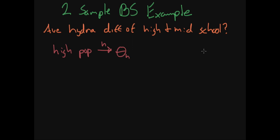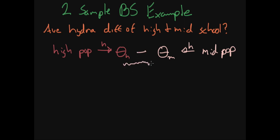We would do the exact same thing for middle school. So we go ahead and get the mid-pop, take the hydration of the mid-pop, and we get theta sub M — the middle school hydration. And what we do is we subtract them. This difference is exactly what we're looking for. Now we can't do this because we'd have to survey literally all the high schoolers in the country or in our district, as well as all the middle schoolers.